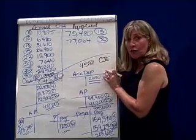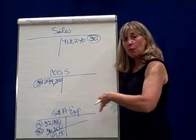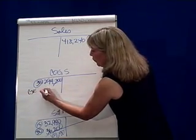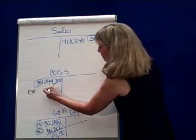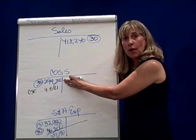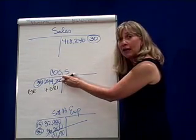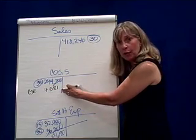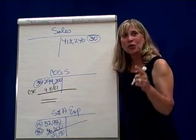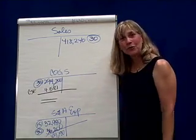We take that underapplied overhead, meaning that cost of goods sold is too skinny, too small, and we've got to bulk it up because it was underapplied. So we're going to make that closing journal entry for $4,581 to cost of goods sold. So we take the cost of goods sold number — up until this point it had actual materials, actual labor, but applied or estimated overhead — and we bulk it up by what was underapplied. Now cost of goods sold will contain actual materials, actual labor, and the actual overhead cost.